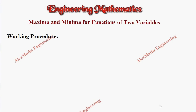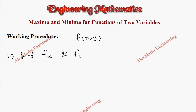Hi students, this is Alex. In this video we are going to discuss the working procedure of maxima and minima for functions of two variables. The function f(x, y) will be given in terms of x and y. As a first step, we have to find the partial differentiation of the function with respect to x, that is fx, and the partial differentiation with respect to y, that is fy.